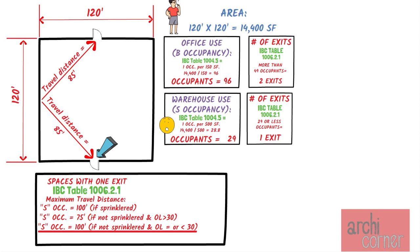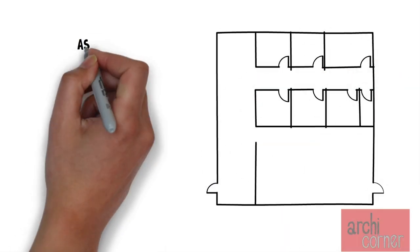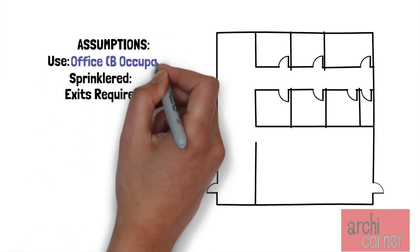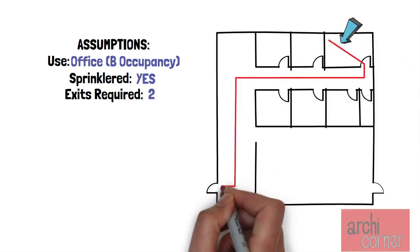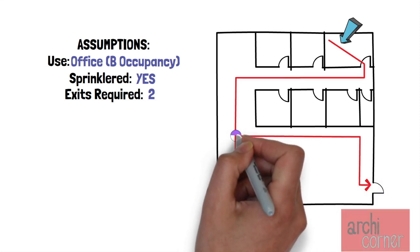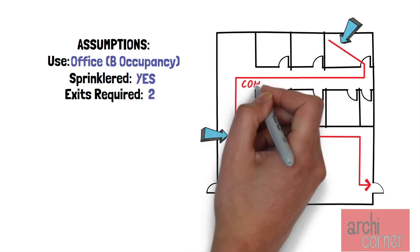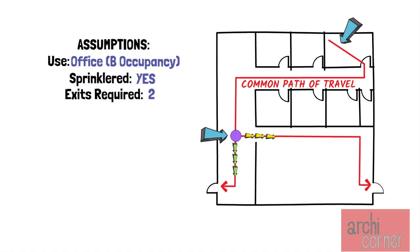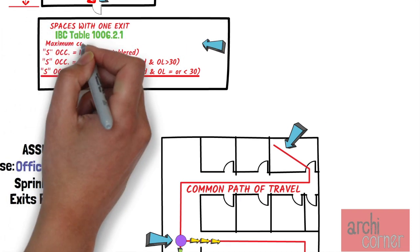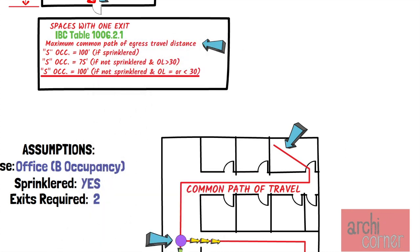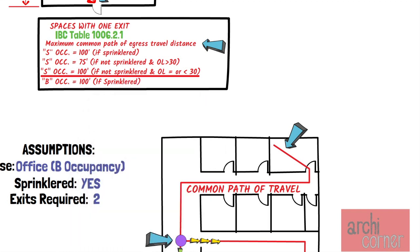Now that we understand path of egress travel distance and how it affects the number of exits, let's discuss what happens to travel distance when you do need two exits. Assume this space is used for office, it is sprinklered, and it requires two exits. Notice that even though there are two exits, a person must travel up to a certain point before having the option to decide which direction to take. This first portion of the path of egress travel is what is known as the common path of travel, and that is also what IBC Table 1006.2.1 limits — the complete header for this section is titled 'Maximum Common Path of Egress Travel Distance.' The common path of travel for an office use or B occupancy is limited to 100 feet in a sprinklered building.